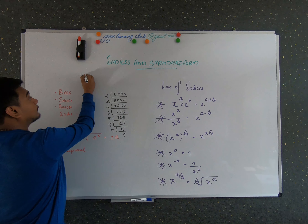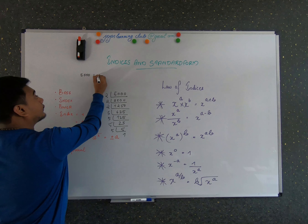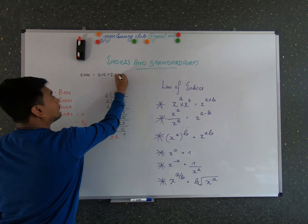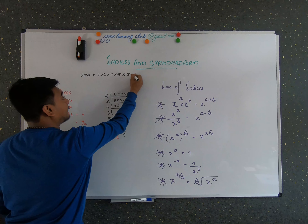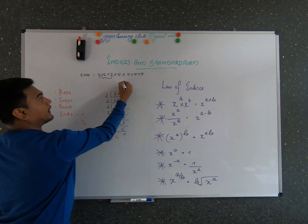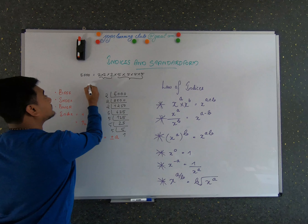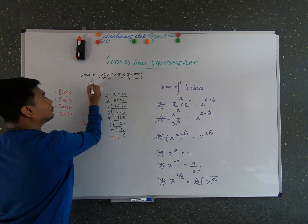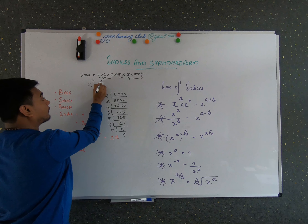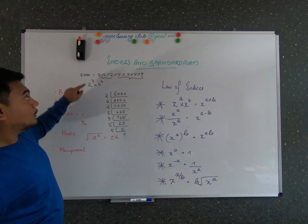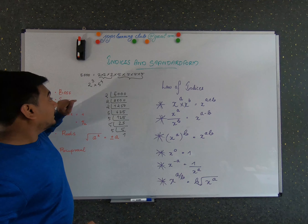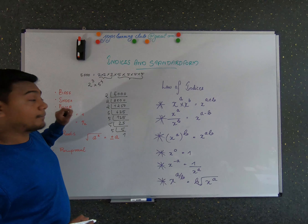So the factors of 5000 are: 2 times 2 times 2, and 5 times 5 times 5 times 5. We can group these together and write it as 2 to the power of 3 times 5 to the power of 4. These powers 3 and 4 are called indices, or index numbers.